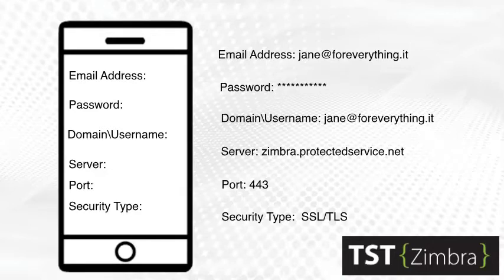Go ahead and enter your email address and password. In the server section enter zimbra.protectedservice.net. Now enter the port number 443 and the security type as shown in the video.